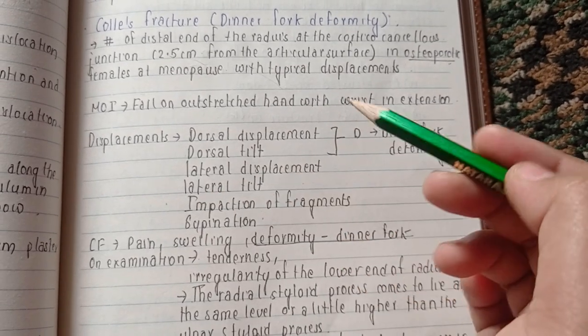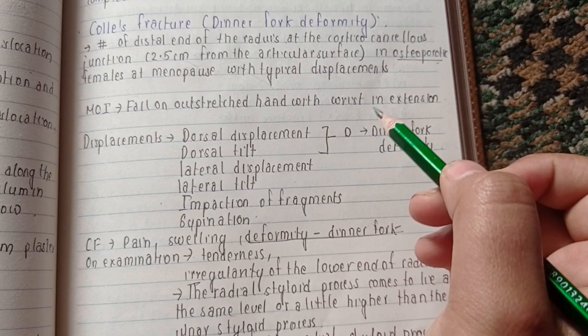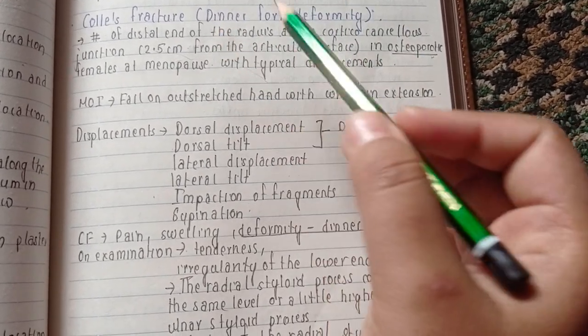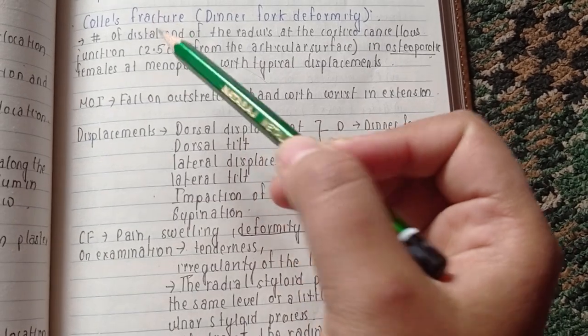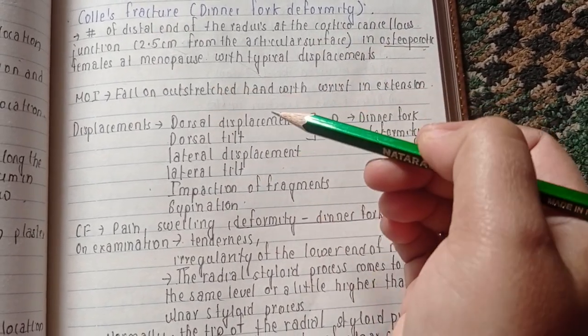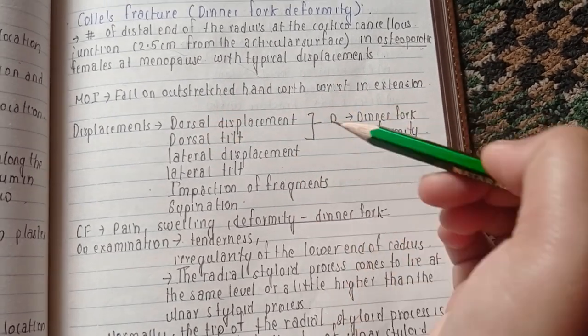We know about dinner fork deformity which can occur in this type of fracture. It occurs in case of dorsal displacement and dorsal tilt - DD for dorsal and D for dinner fork deformity.